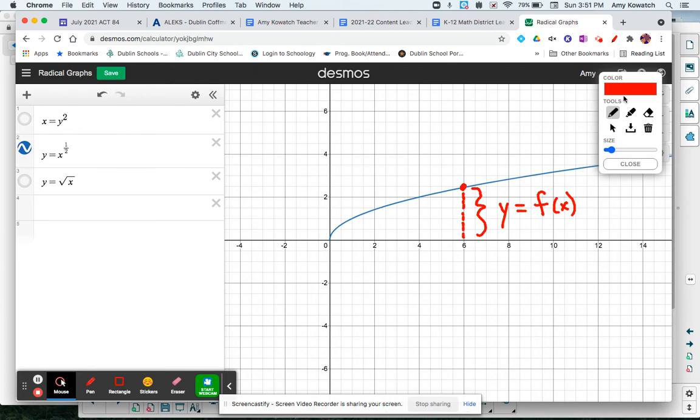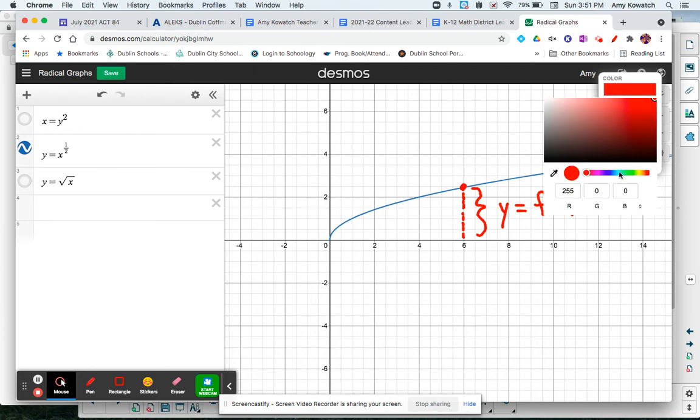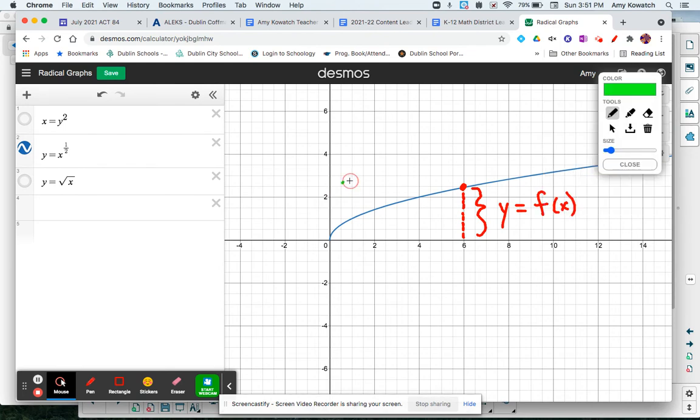And then later in calculus, something that is important for us later, if you were to go, let's use green. If you were to go this direction to the point, this is actually the distance X away, distance away from the Y axis. And that is a function of Y. So you don't have to necessarily know this for this year, but this is where we're headed.